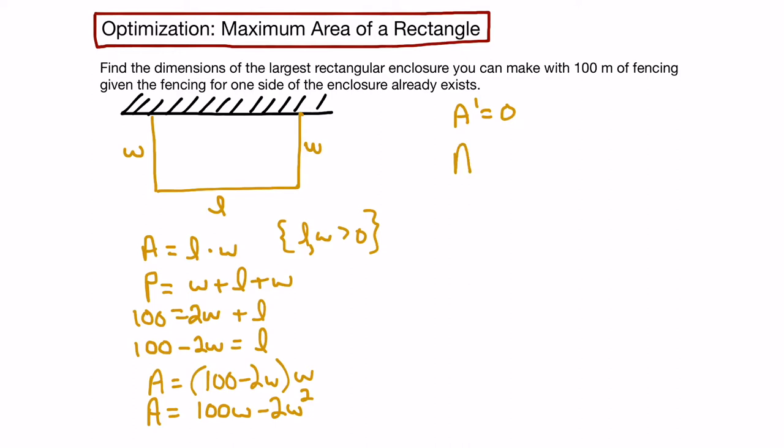Let's find the derivative of our area function using sum rule and power rule. We would get the derivative being 100 minus 4w, and we set that equal to 0. Solve for w: move it over, that would be 4w equals 100. Divide by 4, so w equals 25.